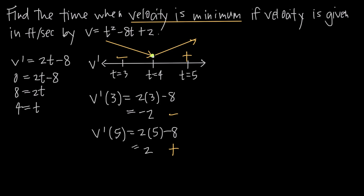We've used the first derivative test to prove that t equals 4 represents a minimum of the function. But we always have to go back to the original question to make sure we answer exactly what's being asked. The question asks for the time when velocity is minimum, and since velocity is in feet per second, our answer is that when time is 4 seconds, that's the time at which velocity is minimized.